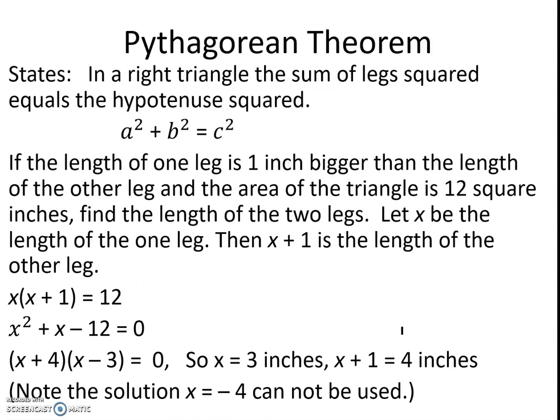The next example is the Pythagorean theorem. It states in a right triangle, the sum of the legs squared equals the hypotenuse squared. And in general, we label a right triangle's legs as a and b and the hypotenuse c. So now we have the equation or the formula a squared plus b squared equals c squared, known as the Pythagorean theorem.